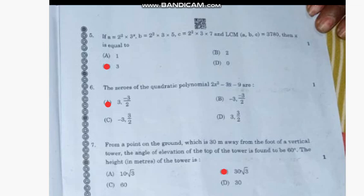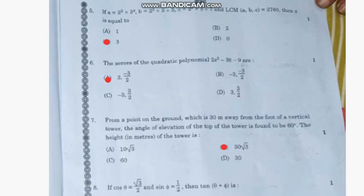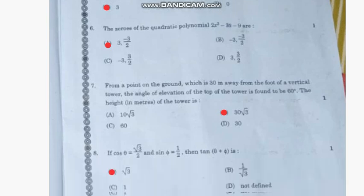Question number 6: The zeros of the quadratic polynomial 2x² - 3x - 9 is—the correct answer is option A, 3 and -3/2.